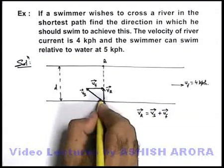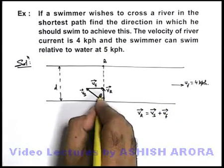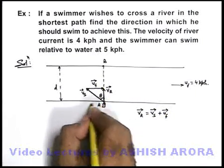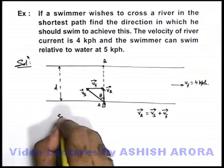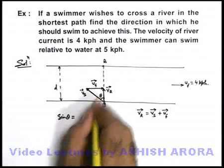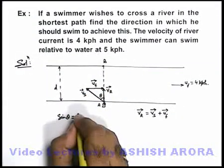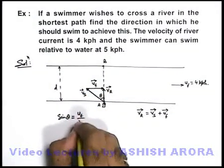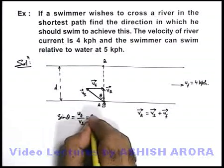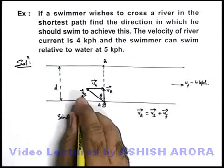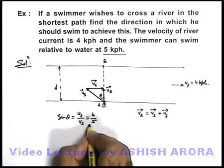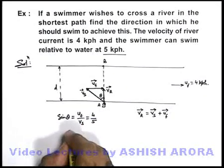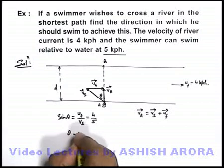So in this situation, he needs to swim at an angle theta from the normal to the bank. This theta can be obtained directly. In this triangle we can say sine theta is equal to u_f upon v_s. So this will be 4 divided by, as velocity of swimmer is given as 5 kph, so sine theta will be 4 by 5. So here you can see that theta will be equal to 53 degrees.